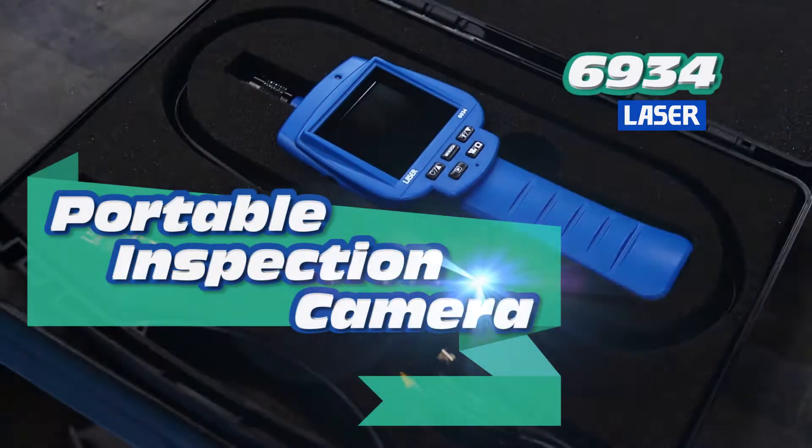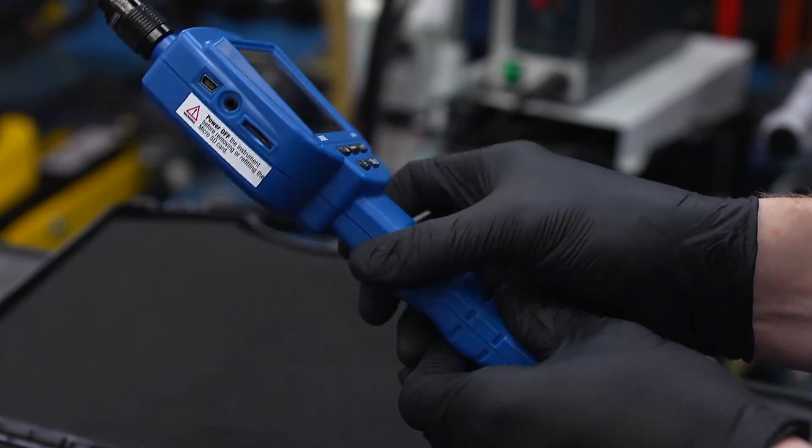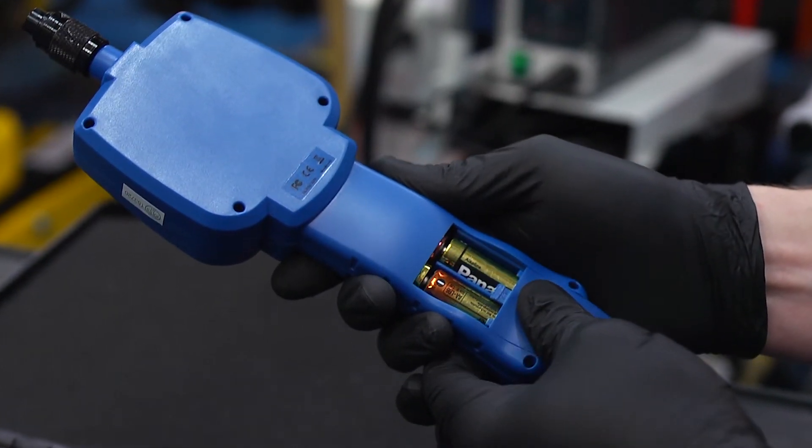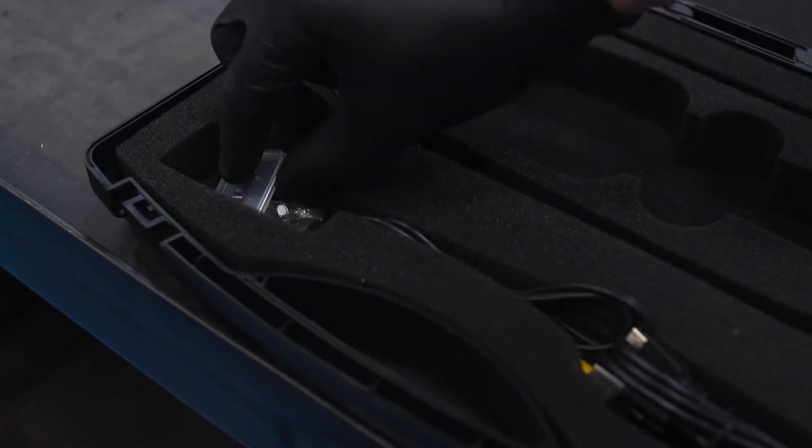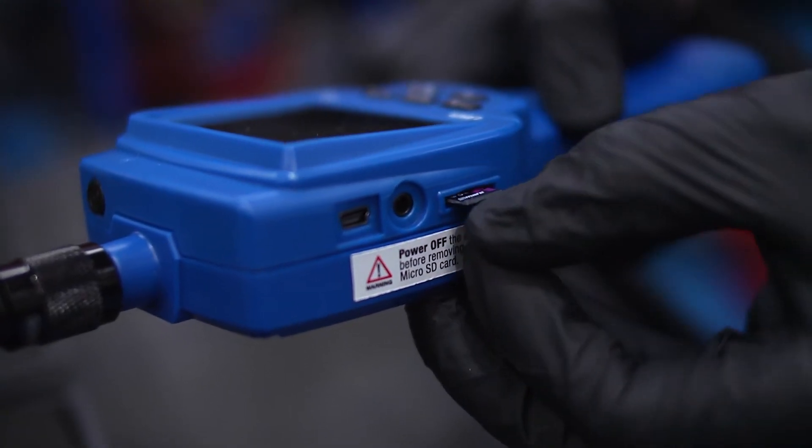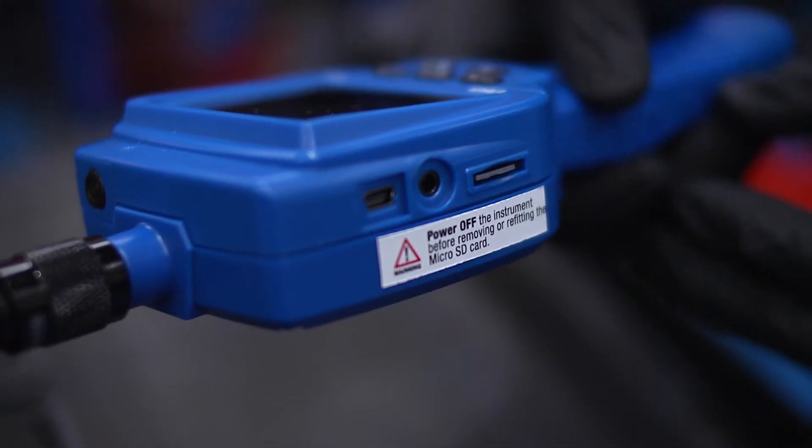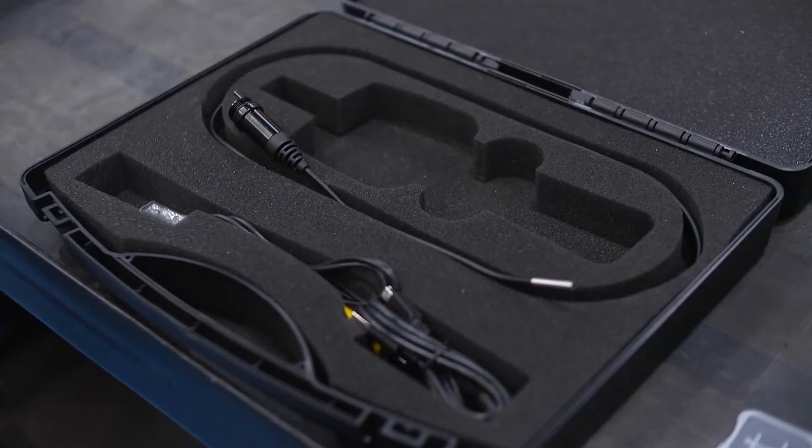The laser portable inspection camera allows you to easily perform visual inspections in hard to reach areas. It's battery powered and its lightweight handheld design means that it is extremely portable. It is fitted with a micro SD card which enables still images and video recordings to be saved. Sound is also recorded.